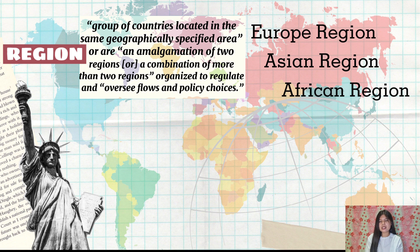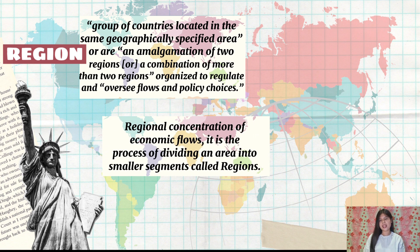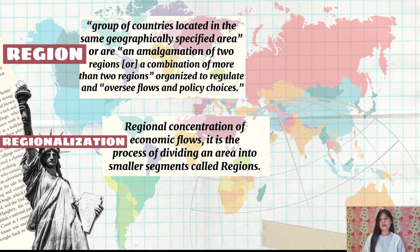Those regions are made up of nations or countries. When we say regional concentration of economic flows, it is the process of dividing an area into smaller segments called regions — this is regionalization. One of the most obvious examples of regionalization is dividing a nation into different states or provinces. Businesses use regionalization as a management tool to ensure that the needs of a particular area are met.